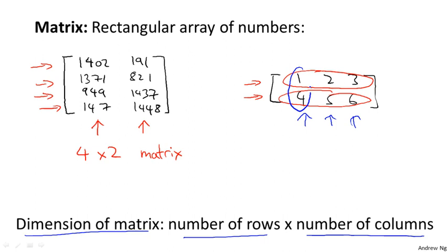And it has three columns, right? That's the first column, that's the second column, that's the third column. So this second matrix, we say it is a two by three matrix, or we say that the dimension of this matrix is two by three.